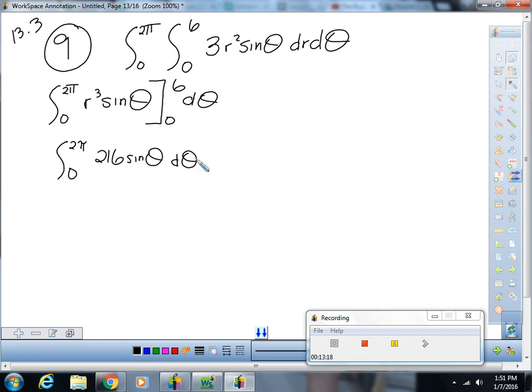Integral of sine is negative cosine, right? Okay, so you get negative 216 cos θ as theta goes from zero to 2π, which gives you negative cosine of 2π is 1, so you get negative 216 minus negative 216, which is also the cosine of zero, which is zero.